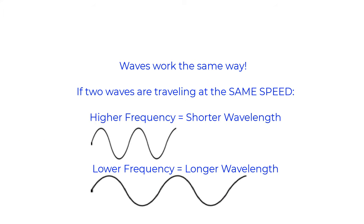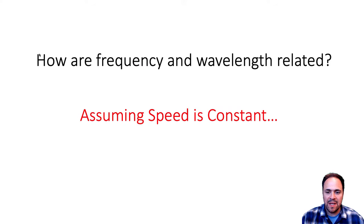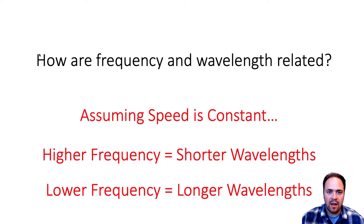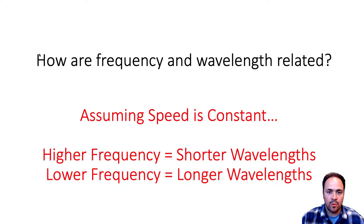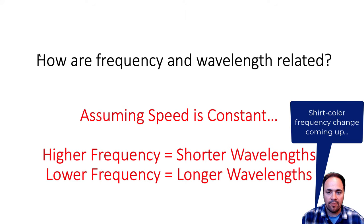Waves work similarly. Higher frequency waves are shorter than lower frequency waves. In order for more waves to pass by per second, those waves must be shorter. Lower frequency waves — like longer cars — don't pass by as often due to their longer wavelengths. So assuming constant speed, higher frequency means shorter wavelength, and lower frequency means longer wavelength.